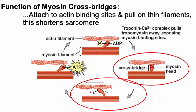Now, if you don't have additional ATP, you're going to end up having the cross bridge stay bridged — those two are going to stay bound together. And in fact, that's what happens after we die. That's what leads to rigor mortis, which I'll talk about in just a second.